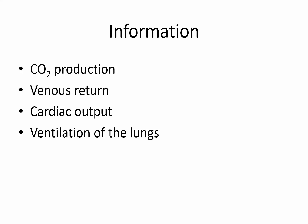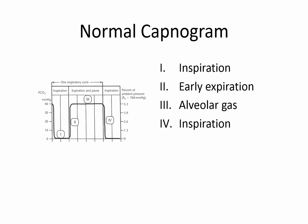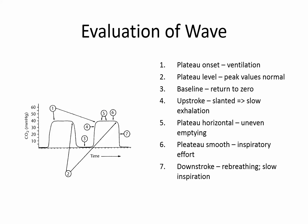Capnometry tells you something about CO2 production, venous return, cardiac output, and ventilation of the lungs. The normal capnogram is described as having four parts: inspiration, which coincides with a CO2 of zero; early expiration; the alveolar gas portion; and then the onset of inspiration again. Those who write about these things identify seven, eight, or even nine portions that need to be evaluated when looking at the CO2 waveform.